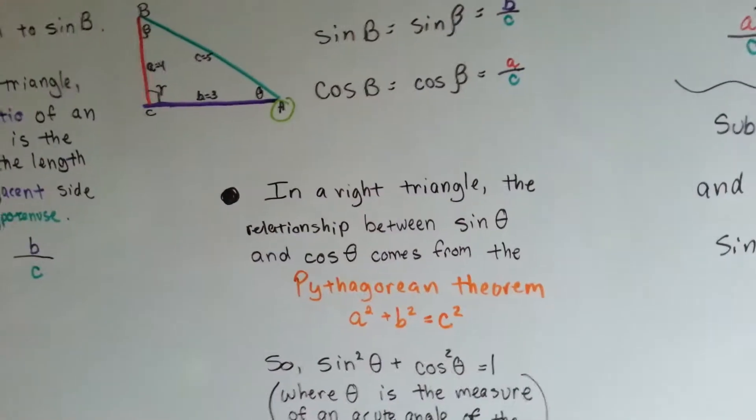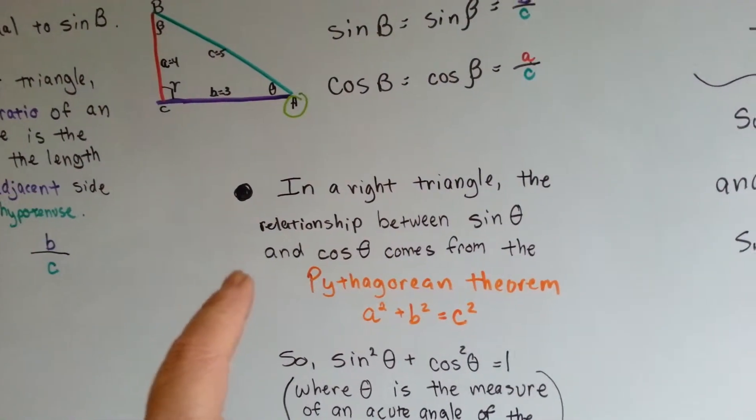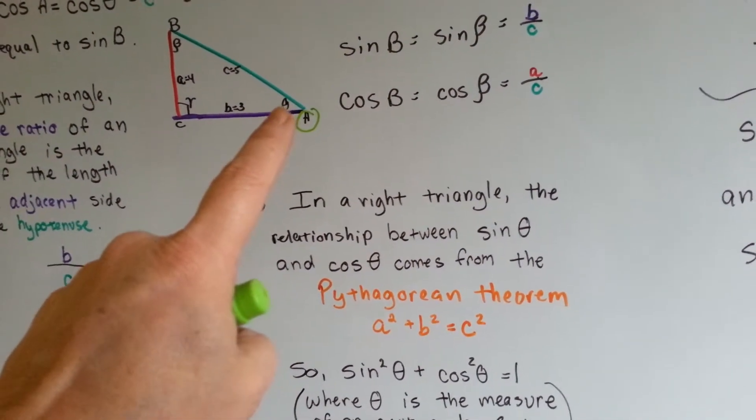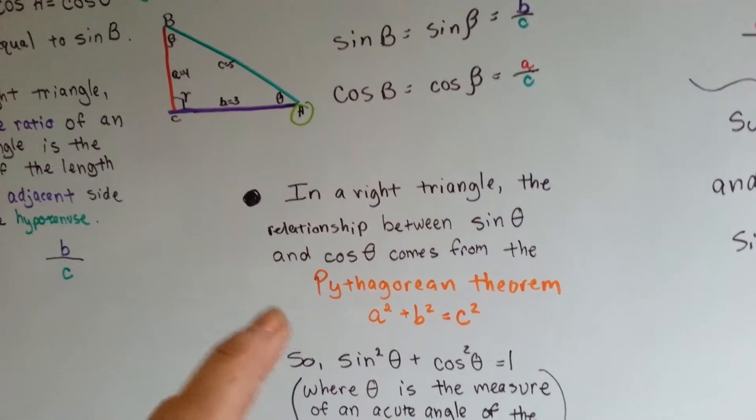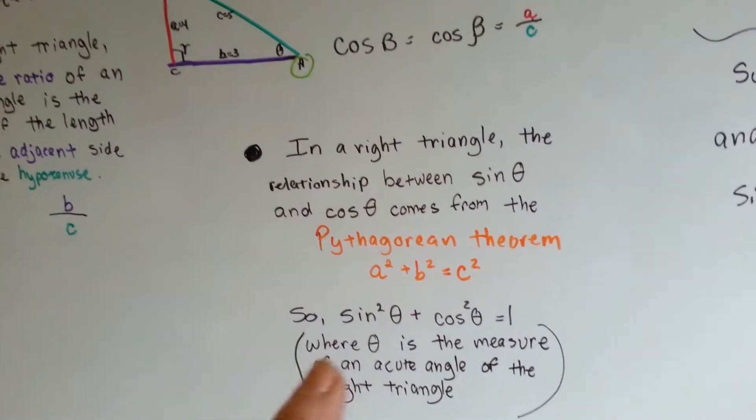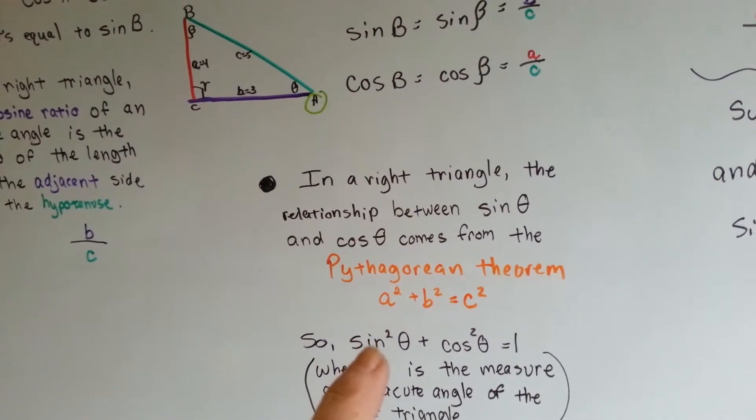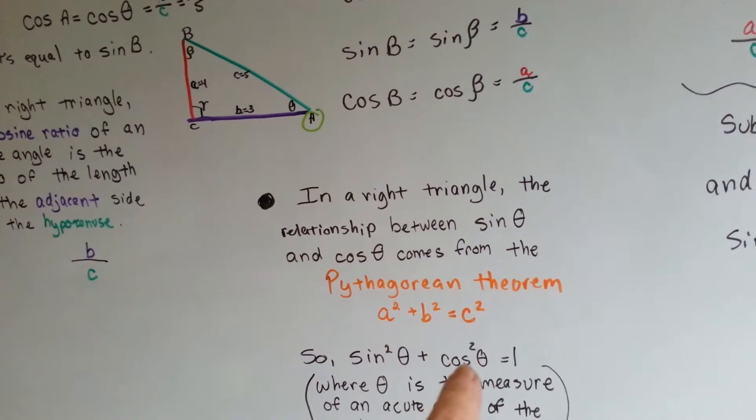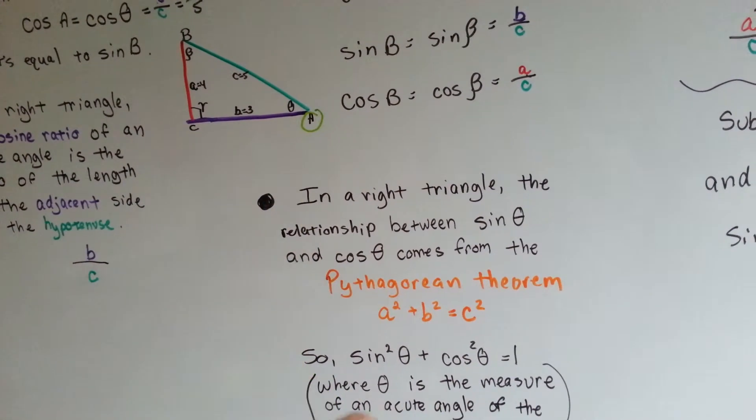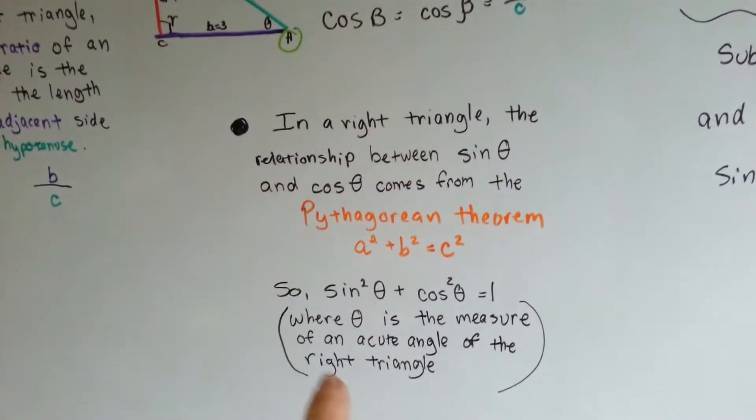Well, in a right triangle, the relationship between sine theta and cosine theta comes from the Pythagorean theorem, A squared plus B squared equals C squared. So, if you square sine theta, and you add the square of cosine theta, it'll equal one.